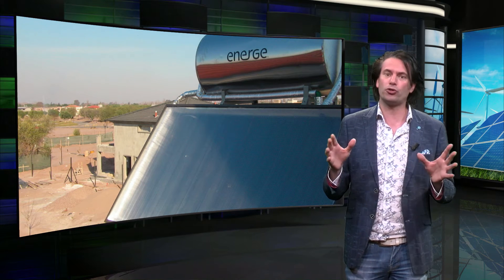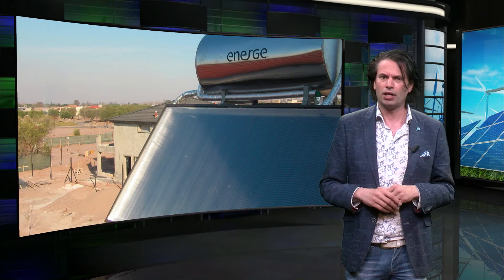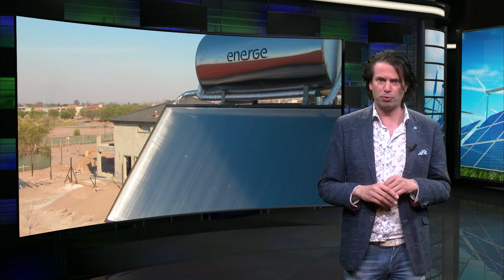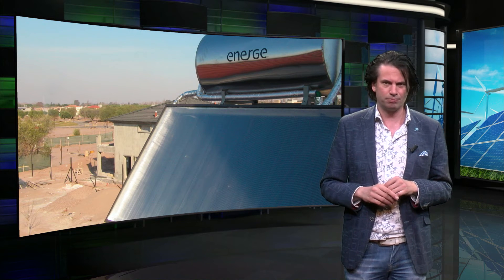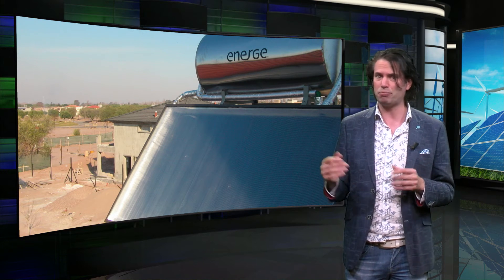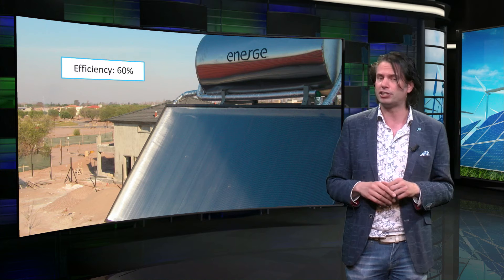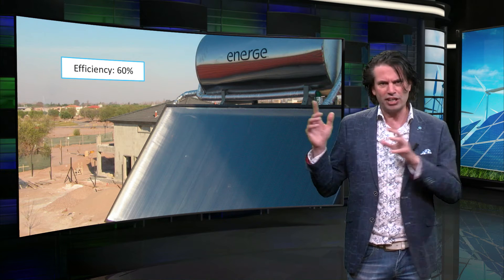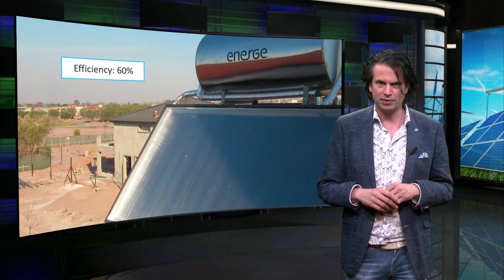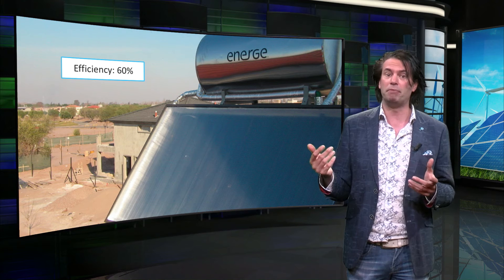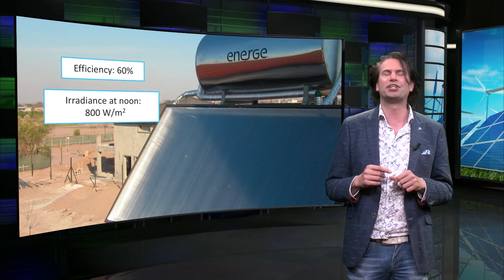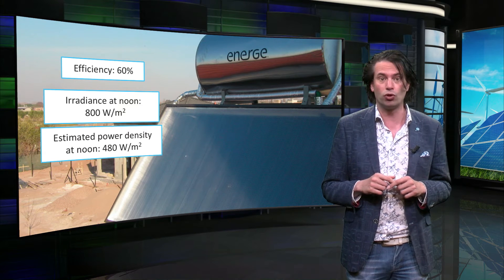This can be done on a personal rooftop scale. Let's look at a rough calculation of a flat plate rooftop solar thermal installation. Typical efficiency of these installations ranges from 60 to 80 percent. Assuming the lowest efficiency of 60 percent, and still at the same location in India with the same irradiance in May, the estimated achievable power density at midday becomes 800 watts per square meter times 60%, which equals 480 watts per square meter of solar thermal collector.